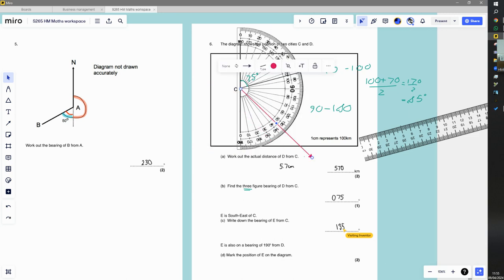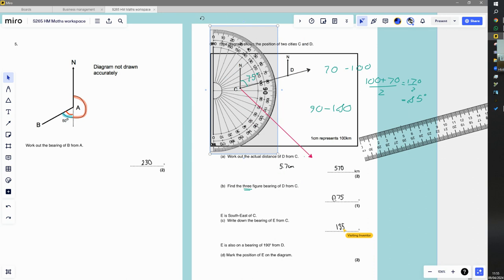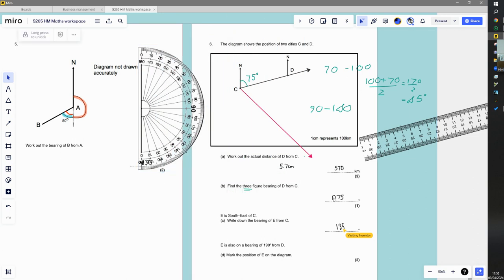If I moved the protractor out of the way, I can see that I've got a line to show me where E is. It's going to be in this direction. I don't know whereabouts on this line it is. I just know it's in this direction.